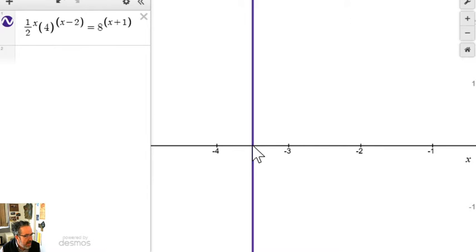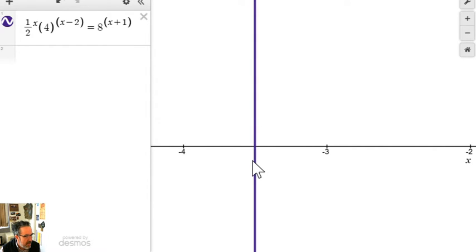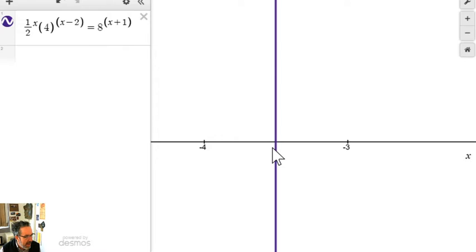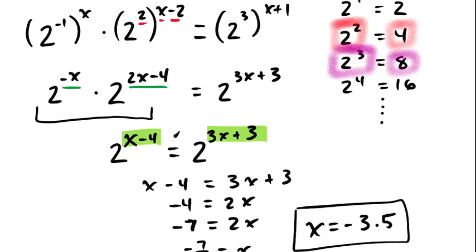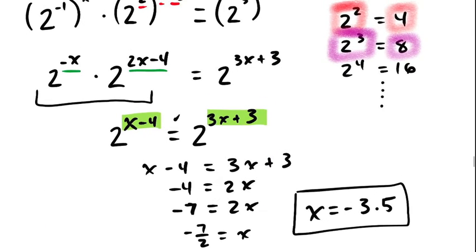Now, what's interesting is that Desmos is not able to resolve this and tell me with any certainty that it's at negative three point five exactly. Normally, if I click on a curve, it'll put a dot there. But it's like, I'm not going to call that. But it's certainly a good visualization for the work that I did on paper to see that x was negative three point five.